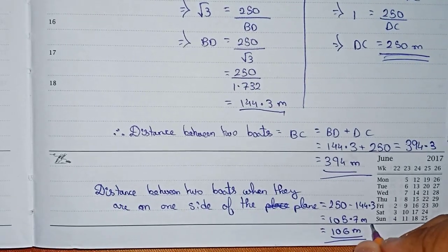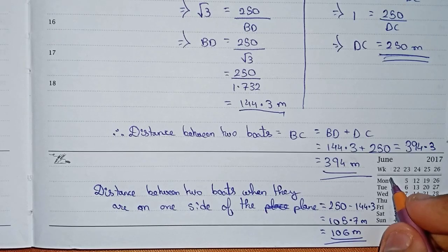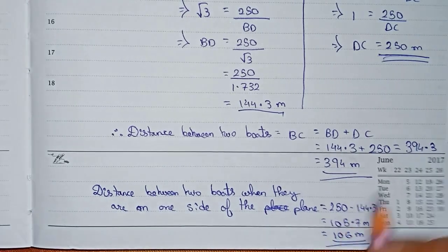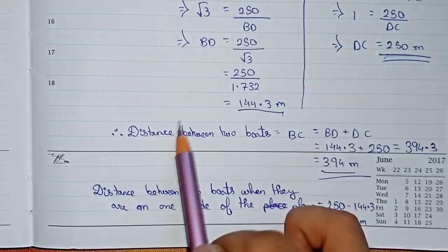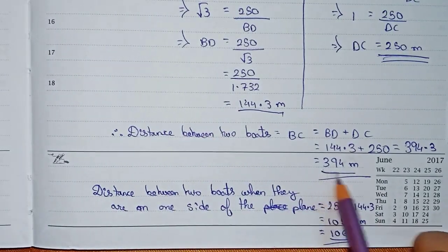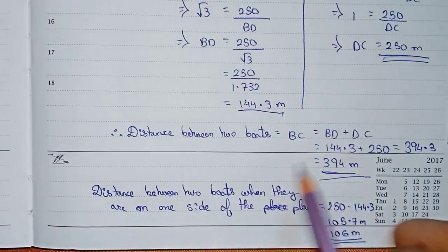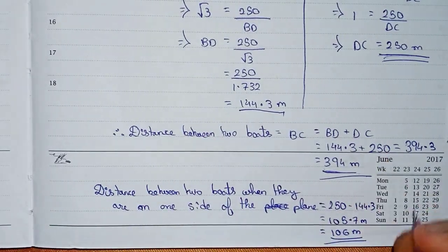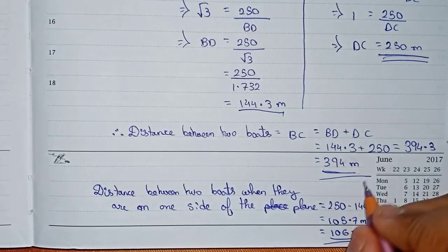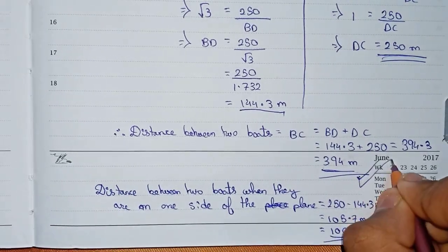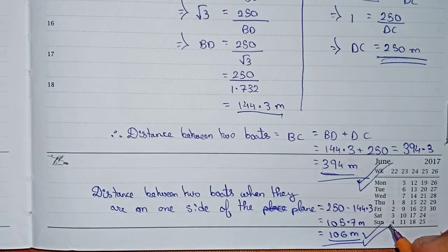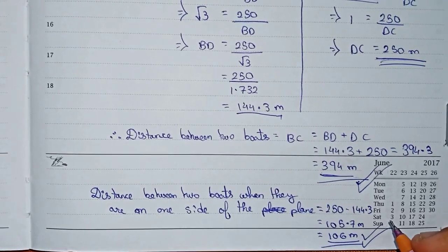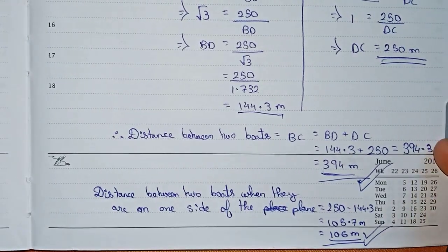So for this question we get two answers. First, when the two boats are on opposite sides of the aeroplane, you get 394 meters. And when the two boats are on the same side of the plane, you get 106 meters. So 394 meters and 106 meters are the final answers. Thanks for watching this video, and please subscribe to my channel for more solutions like this. Thank you.